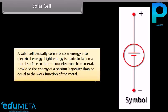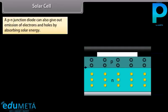A solar cell basically converts solar energy into electrical energy. Light energy falls on a metal surface to liberate electrons, provided the energy of a photon is greater than or equal to the work function of the metal. A P-N junction diode can also emit electrons and holes by absorbing solar energy. The P material at the top is very thin compared to the thickness of the N material.